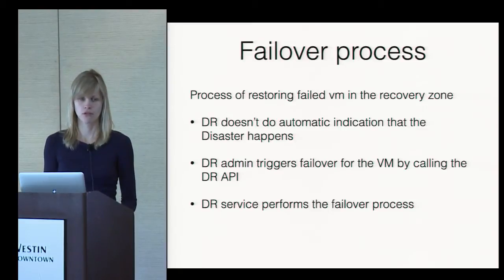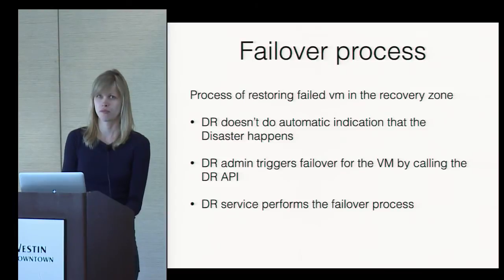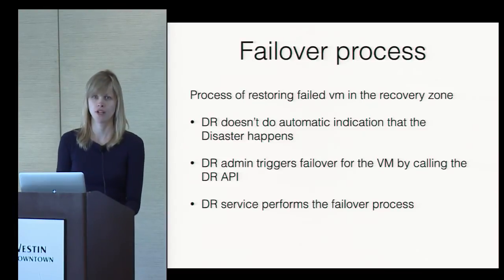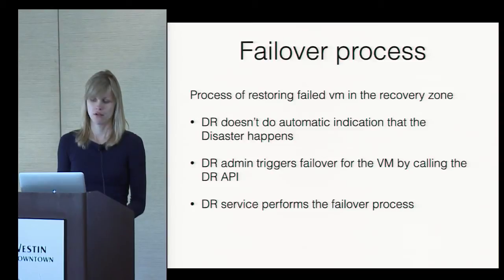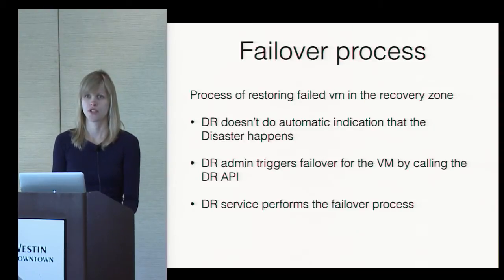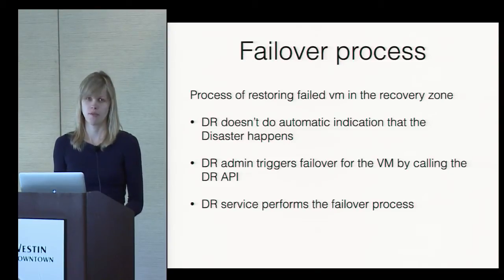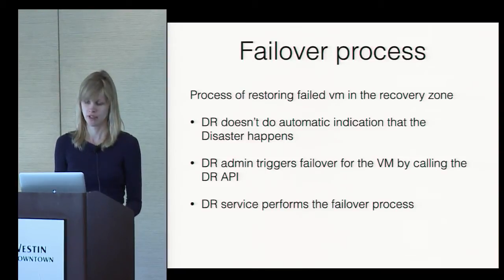For failover — when a disaster actually happens — how does the DR plugin know something went wrong with the zone? There is no automatic indication. The DR plugin doesn't know if anything goes wrong in the original zone. The administrator has to monitor it and report to the DR service by invoking a specific API call to failover the account's VMs. All the DR service does then is prepare the VM to start in the recovery zone.